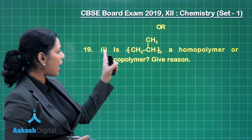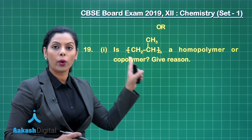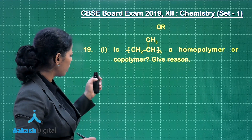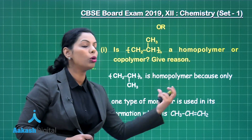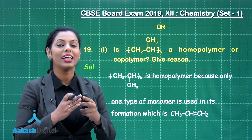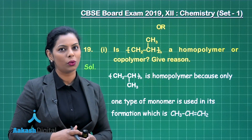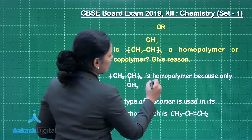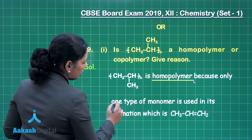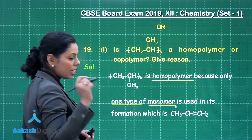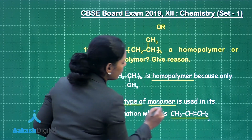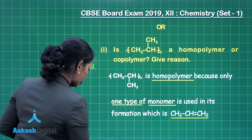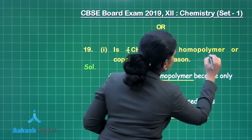For the first part, we have this polymer and you need to find out whether it is a homopolymer or a copolymer. This is a homopolymer, because it has the same type of monomeric unit — a single monomeric unit is there. The monomer you should mention is CH₃–CH=CH₂, that is propene. You will get one mark if you mention this.